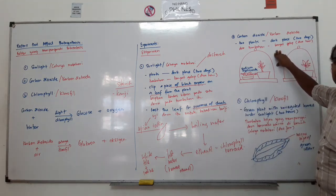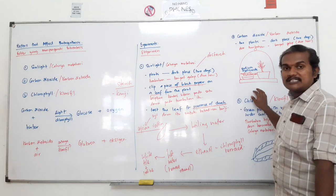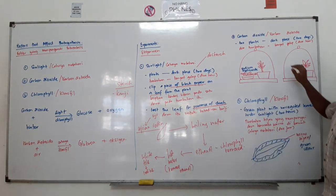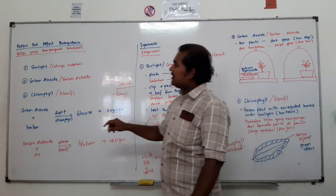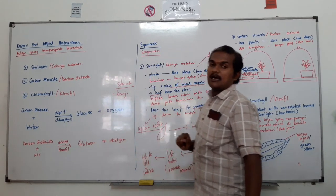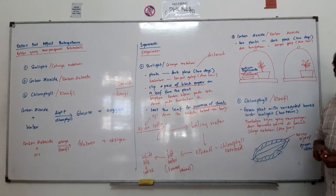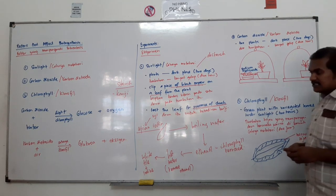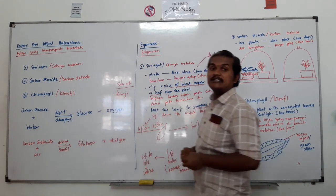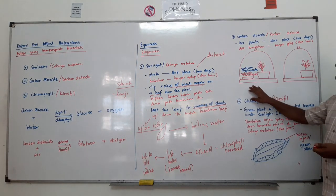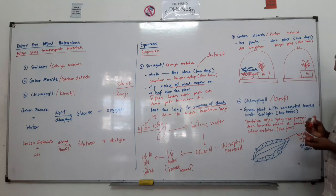Now, the second factor is carbon dioxide. If carbon dioxide is not present, plants cannot do photosynthesis. This is because plants absorb carbon dioxide from the atmosphere in order to carry out photosynthesis. So for this experiment, we need to show that carbon dioxide is essential.